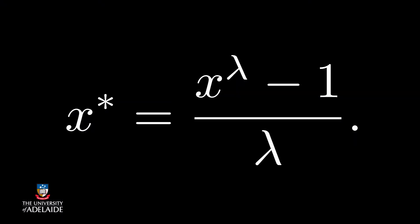So, now let's have a look under the bonnet of the Box-Cox transformation. We'll call the variable we're interested in x, and the transformed version x star. In the Box-Cox method, we consider this general transformation. The Greek symbol there is called lambda.